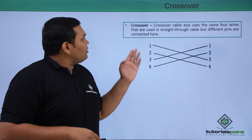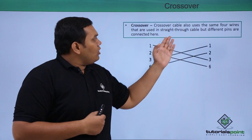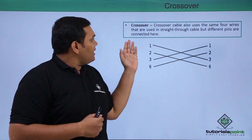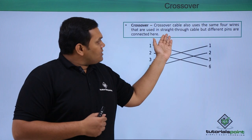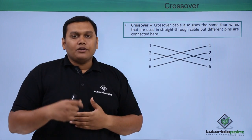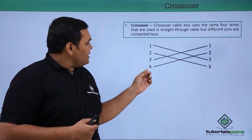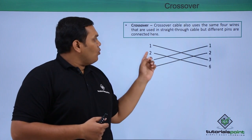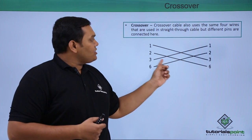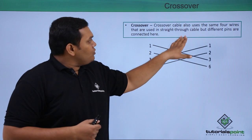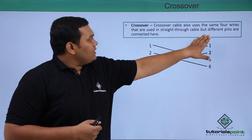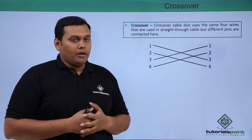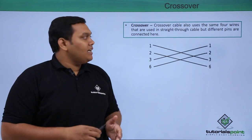A crossover cable also uses the same four wires, but different pins are used compared to the straight-through cable. Pin 6 is connected to 2, 3 is connected to 1, 1 is connected to 3, and 2 is connected to 6. So the same four wires are used but with different pin assignments.